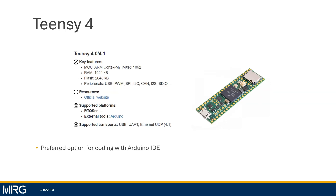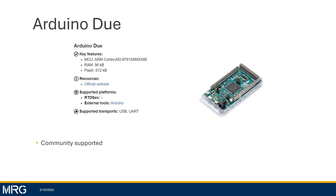Next up is the Teensy 4.0 or 4.1, whichever you prefer. This is what I would consider the preferred option for coding with the Arduino IDE — you just have to get that Teensy library installed for the Arduino IDE and you're good to go. The more affordable or older Arduino options aren't officially supported by Micro-ROS, but the Arduino Due is community supported. We've used it in our organization a couple times and it's a good one to start with if you have a few lying around. One thing to note is that you actually do have to install a patch manually into your Arduino IDE folder in order for this to work — those details are on the GitHub for Micro-ROS Arduino.